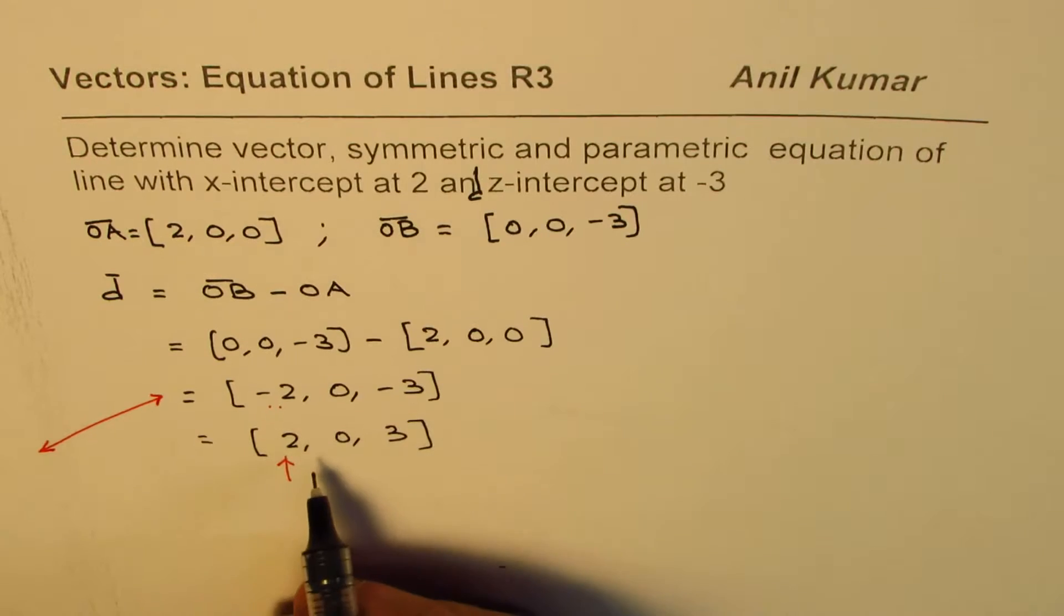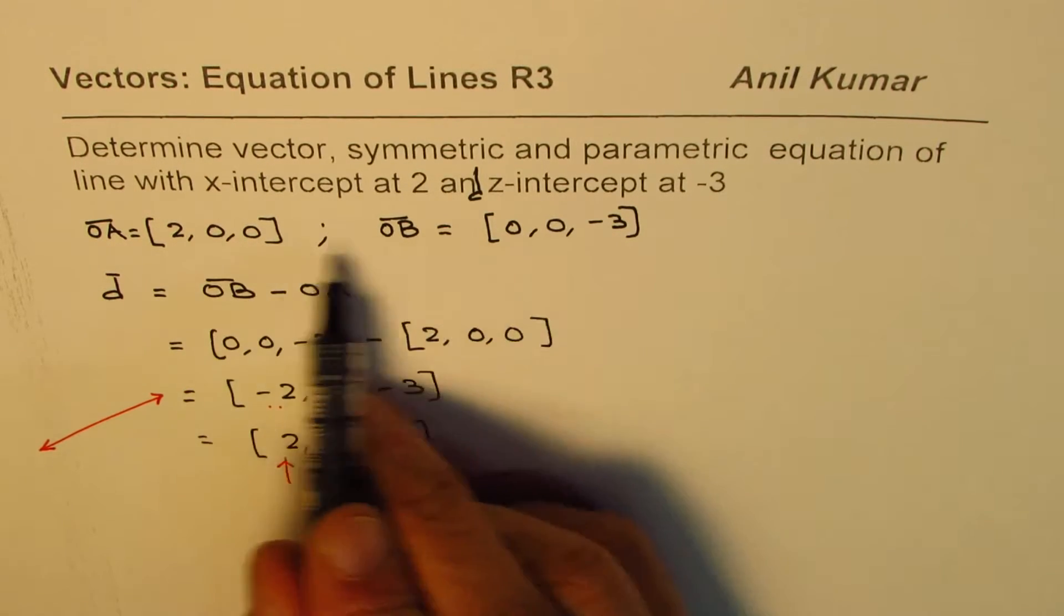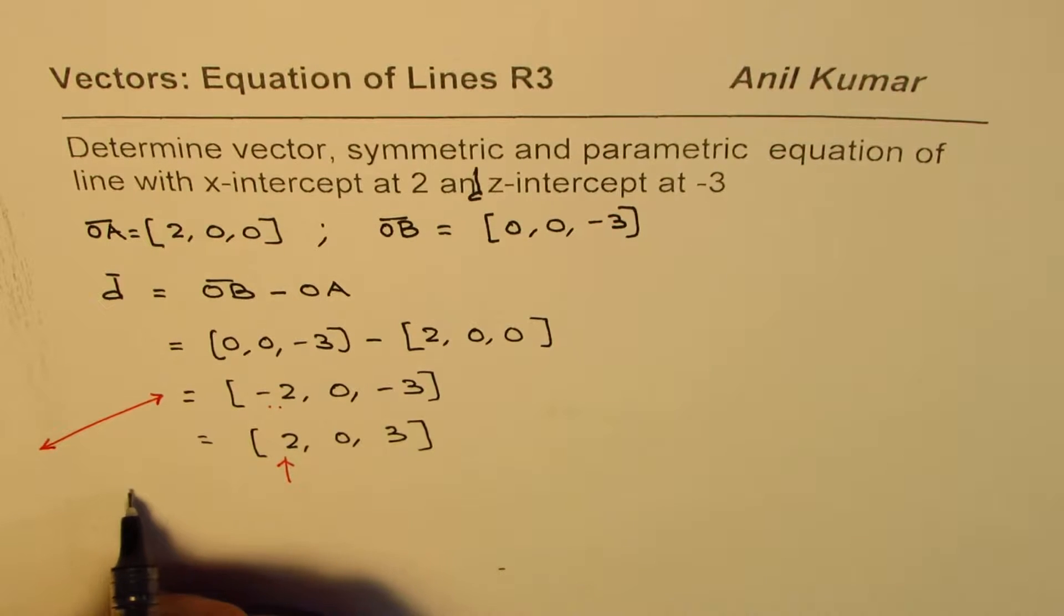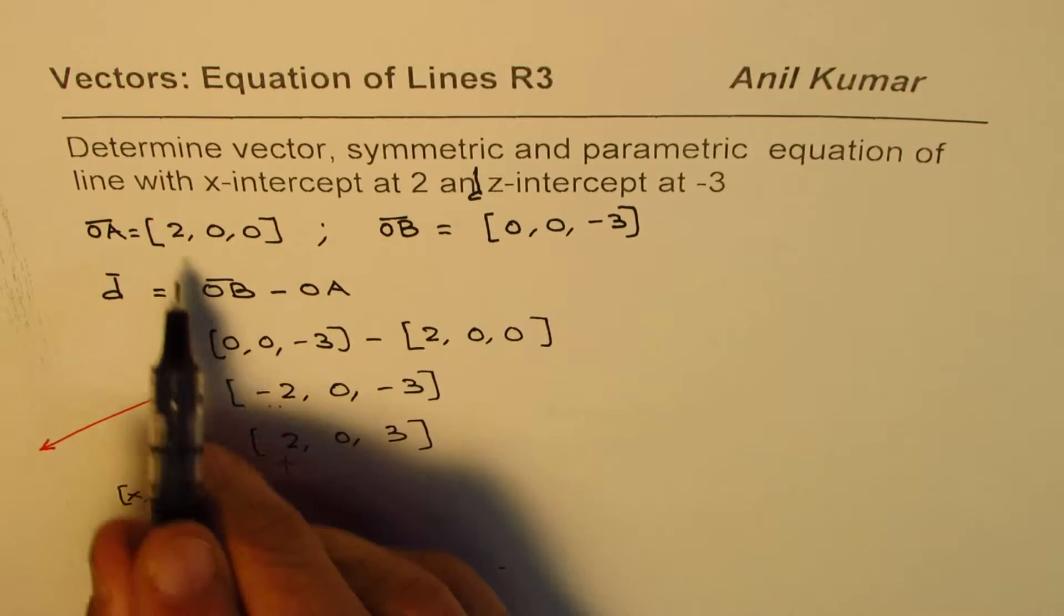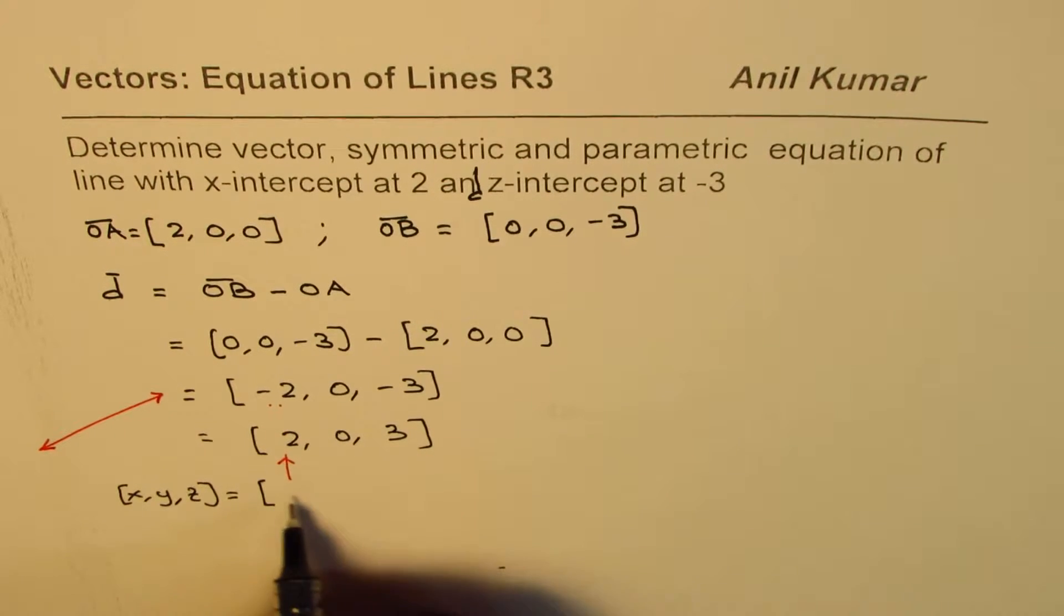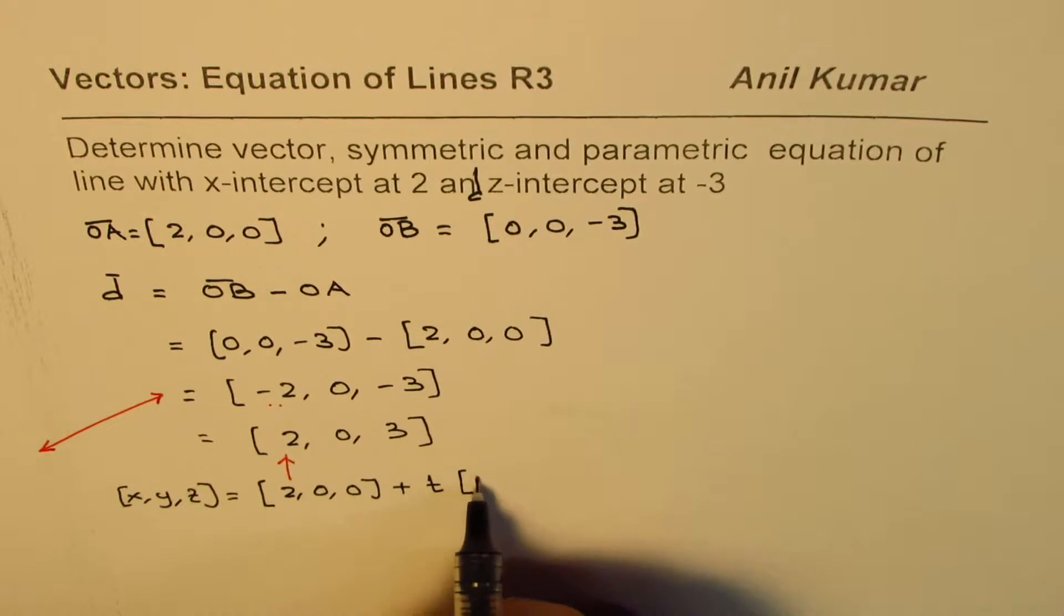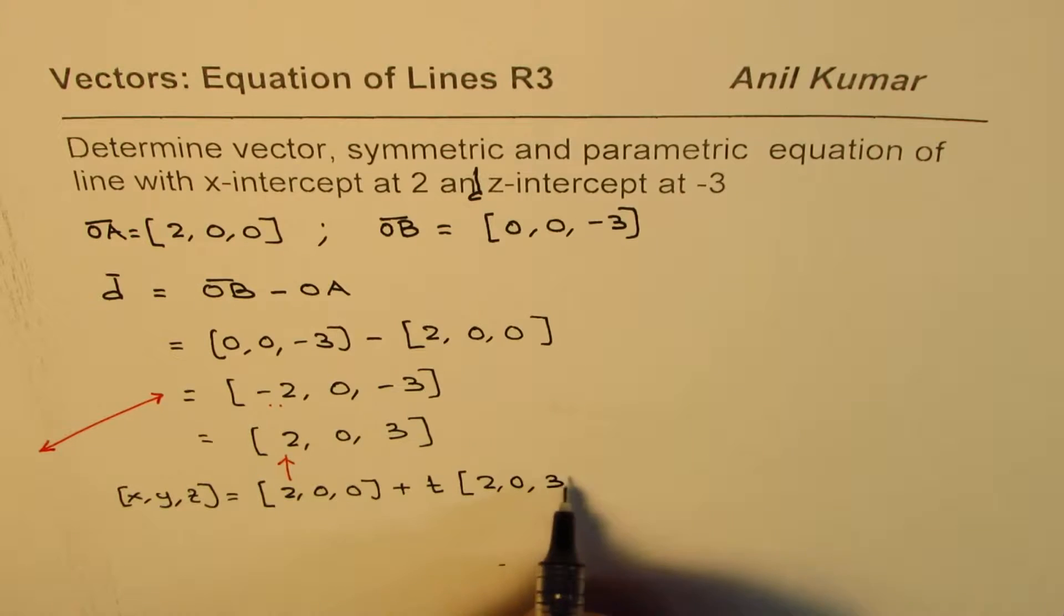So, that gives us the vector equation. We can use any one of these points. Let's use OA. So, we can say the vector equation (x, y, z) is equal to the x-intercept, which is (2, 0, 0), plus the parameter t times (2, 0, 3), right?